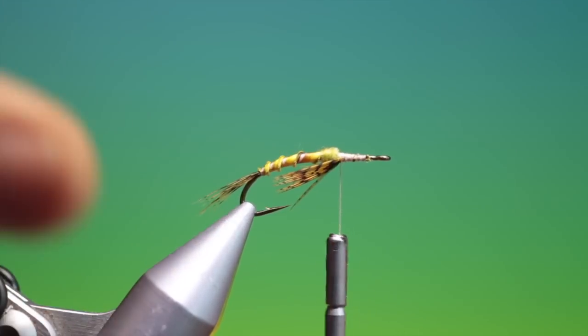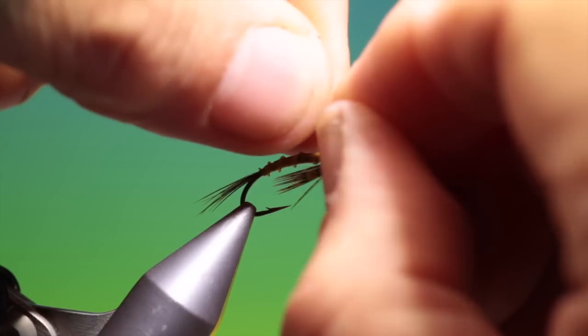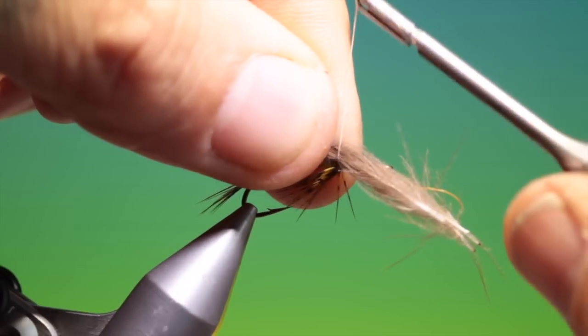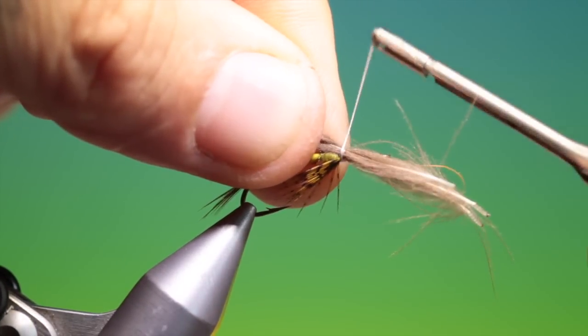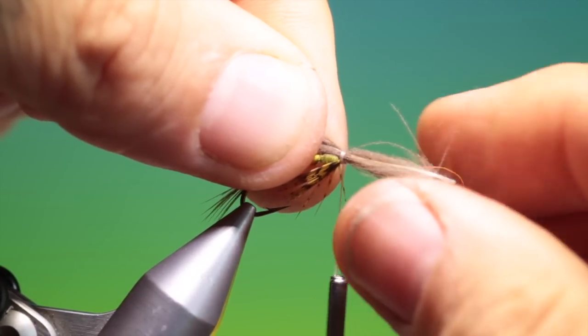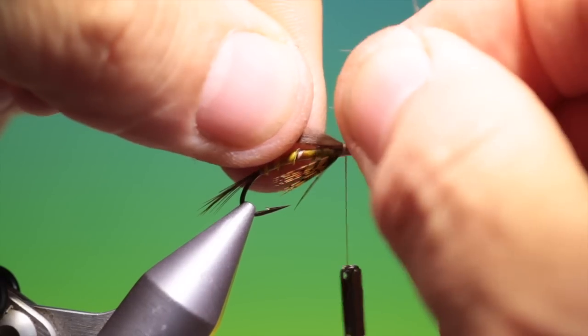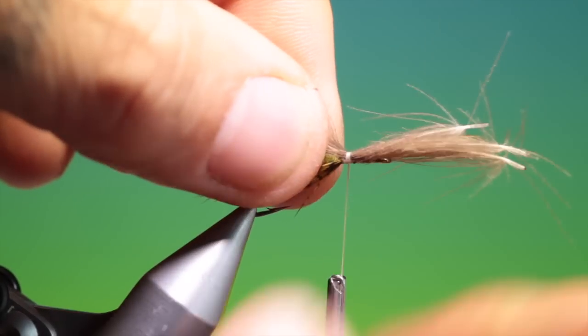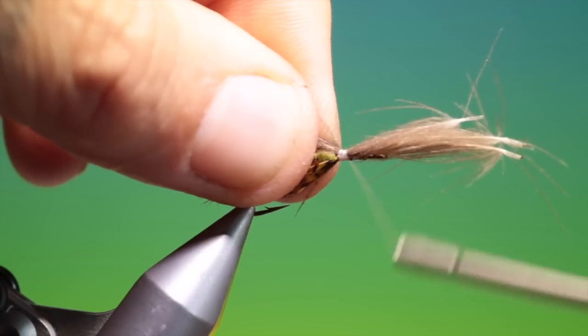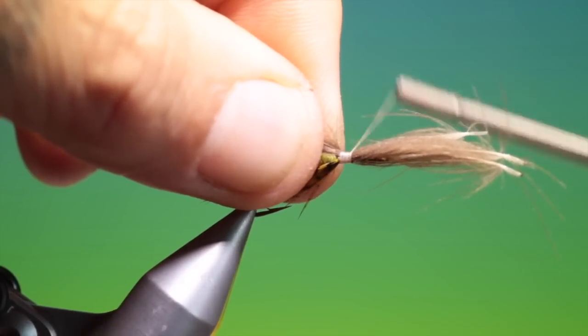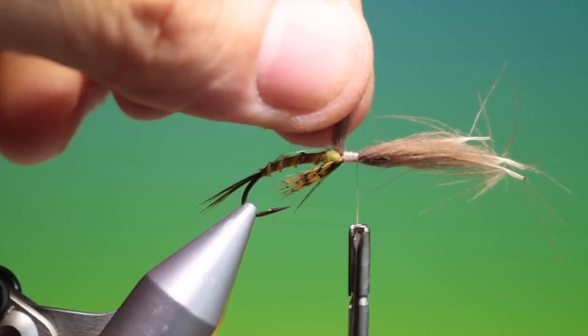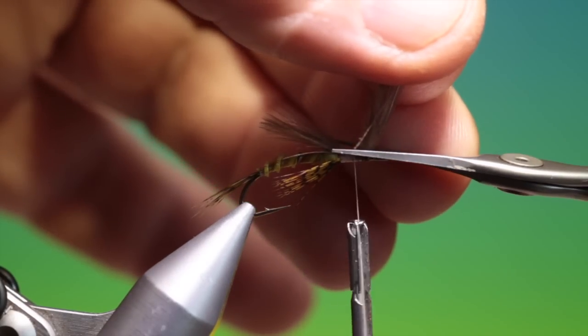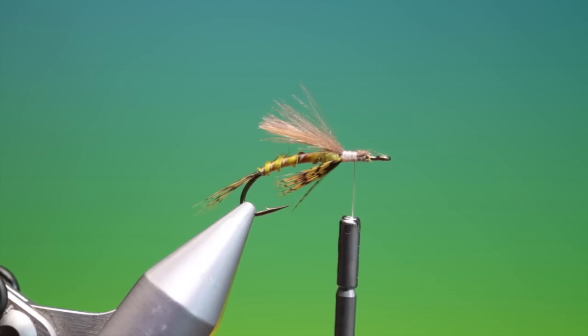Back up into the abdomen. Two or three CDC feathers, beige, beige natural. Cut the turns around that. And then we just pull this through for the underwing. That's perfect. Tie that down. Remove those.